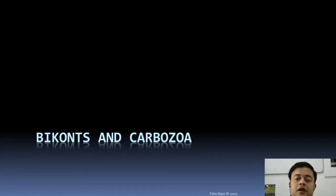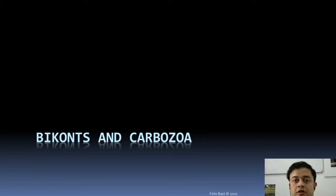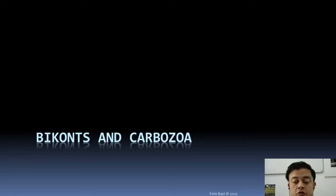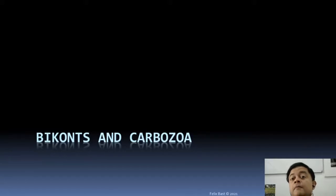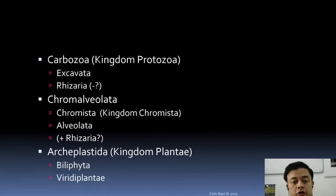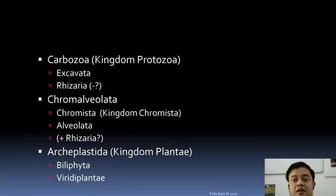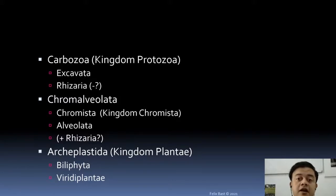Biconts and Carbozoa: Biconts means ancestrally biflagellate — in the motile phase of its life history there are two flagella. That is called the Bicont major group of the eukaryotes. The other major group is Uniconts, which we have already covered. So we will see the introduction of the Biconts and the very important group Carbozoa, which is a protist, in this short video. Biconts have got three kingdoms according to the Cavalier-Smith 6-kingdom classification, so half of all kingdoms are in Biconts — it's a really important member of the taxonomical group.